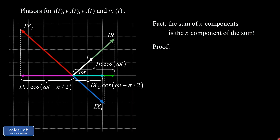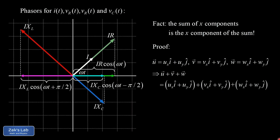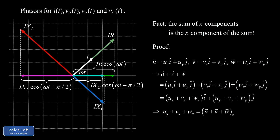Here's the huge payoff: v(t) is the sum of all the x-components of the phasors. The sum of x-components of three vectors equals the x-component of their vector sum. A quick proof: defining vectors u, v, w in component form, their sum gives x-component equal to u_x + v_x + w_x. So the sum of x-components of three vectors is the same as taking the vector sum first, then the x-component.